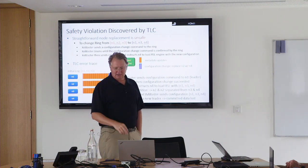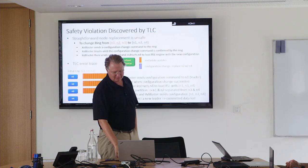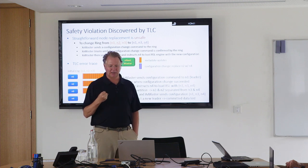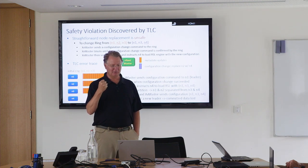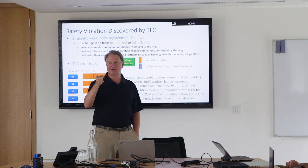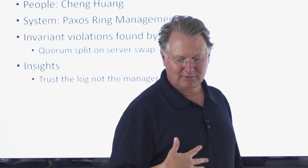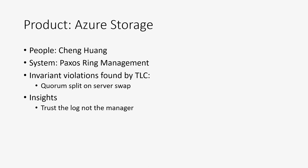The fix was kind of funny — it was not to trust whatever it is that the manager is telling you. The machines should just read their log. If they just trust their log, you can't have the quorum split. That was the observation, and it's a fairly straightforward fix.